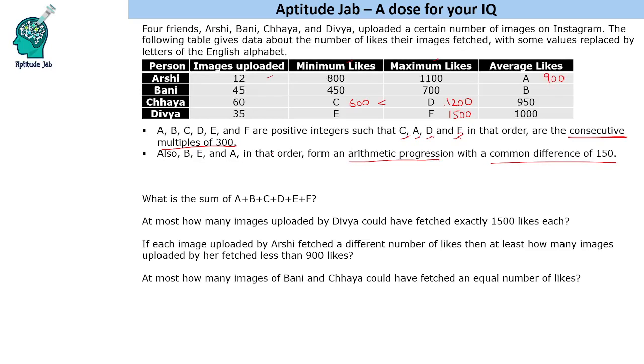Now we are left with B and E. B, E, A form an arithmetic progression with common difference of 150. Will B be less than A or more than A? Looking at this, we have 450 and 700, so B has to be between these two. So B will be 600. B, E, A: B is 600, E should be 750, and hence A will be 900. This gives us the values of A, B, C, D, E, F. That was an easy part.